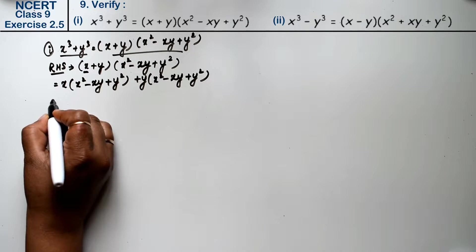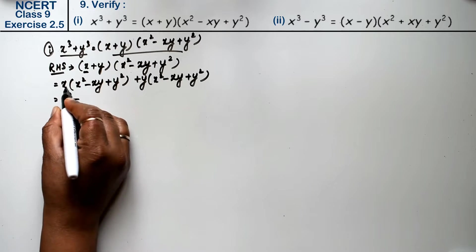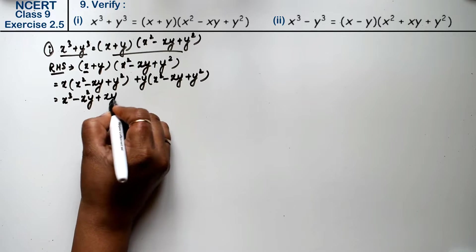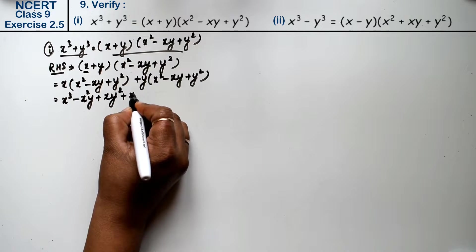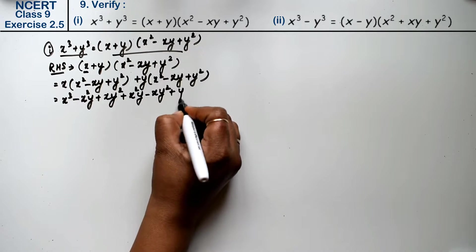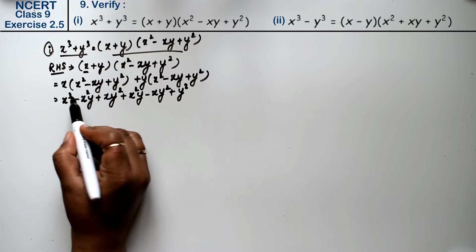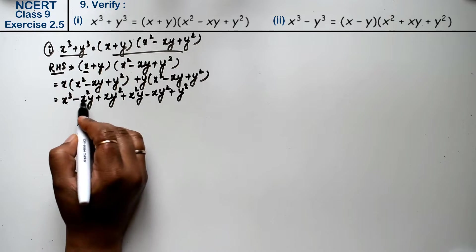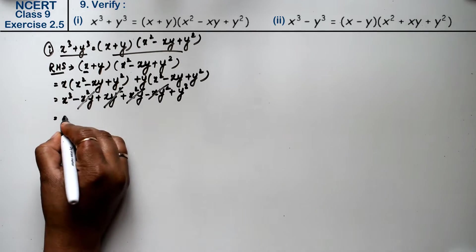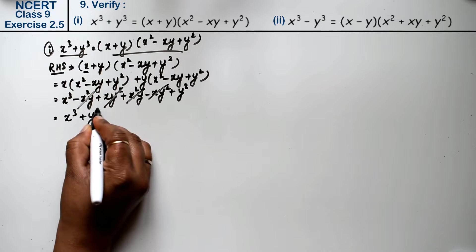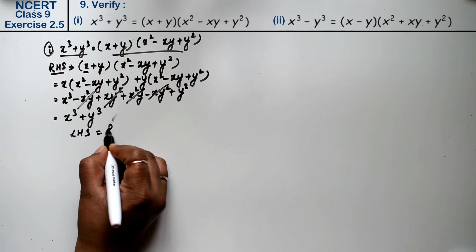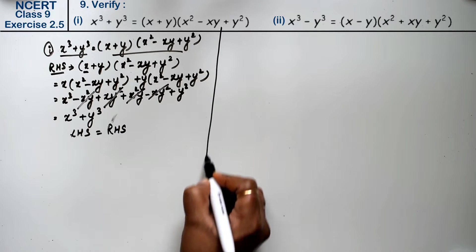So we get: x cube, then x square y, plus x y square, plus x square y, minus x y square, plus y cube. Now x²y — one is plus, one is minus — they cancel. xy² — one is minus, one is plus — they cancel too. So the answer is x cube plus y cube. That means left-hand side equals right-hand side, hence verified.